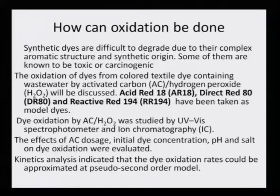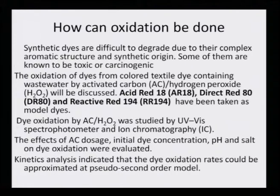The oxidation will be carried out using two oxidative agents: activated carbon (AC) and hydrogen peroxide (H₂O₂). The acid dyes taken into consideration are acid red 18 (AR18), direct red 80 (DR80), and reactive red 194 (RR194). These are used as model dyes to study the oxidative degradation. Dye oxidation by activated carbon and hydrogen peroxide was studied by UV-visible spectrophotometry and ion chromatography — the two methods for determining whether the oxidation process has taken place.